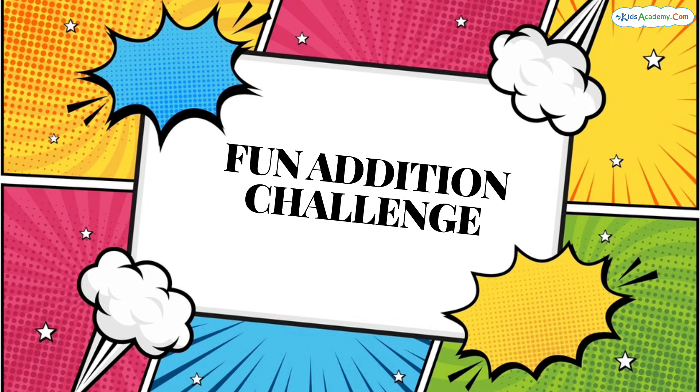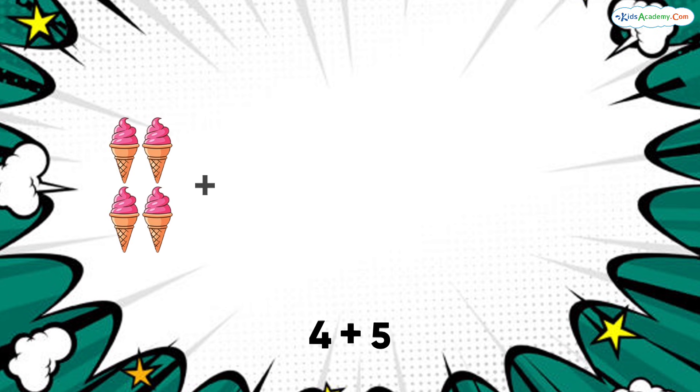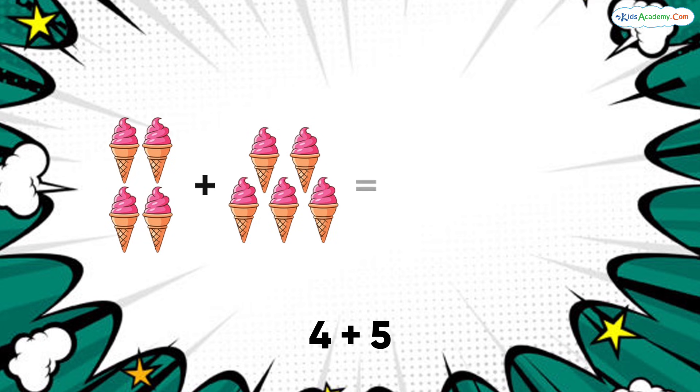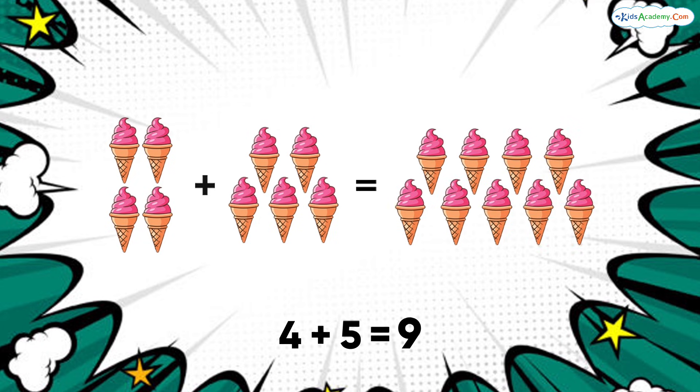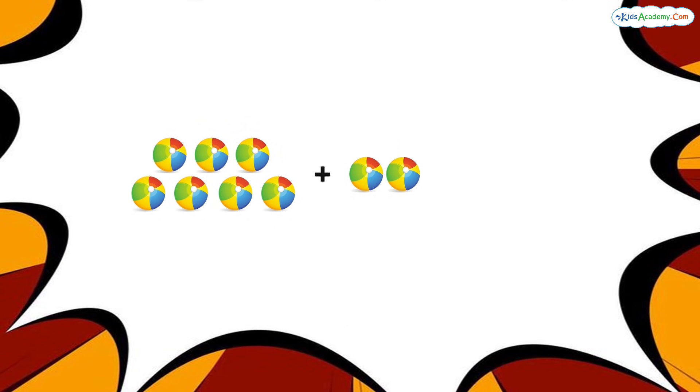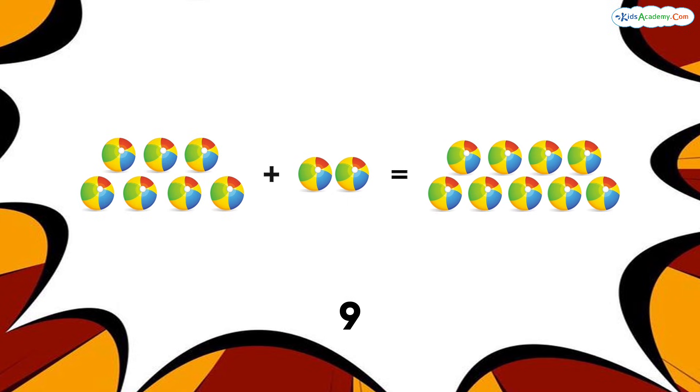Now, it's time for a fun challenge. What is 4 plus 5? Think about it. Do you know the answer? That's right, 4 plus 5 equals 9. Excellent work. Let's do one more. What is 7 plus 2? Yes, it's 9 again. You're a super math star.